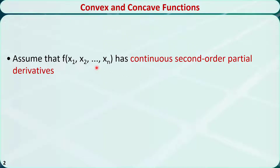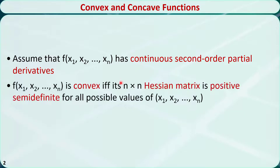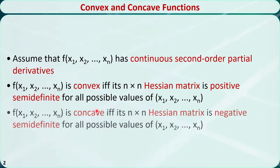Let f be a function of n variables x1 through xn. Assume f has continuous second-order partial derivatives. The function f is convex if and only if its n by n Hessian matrix is positive semi-definite for all possible values of x1 through xn. f is concave if and only if its n by n Hessian matrix is negative semi-definite for all possible values of x1 through xn.